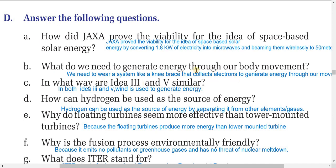Next question: In what way are idea three and idea five similar? If you read the text, you will find that in both idea three and idea five, wind is used to generate energy. Question D: How can hydrogen be used as a source of energy? Hydrogen can be used as a source of energy by separating it from other elements like oxygen and nitrogen.